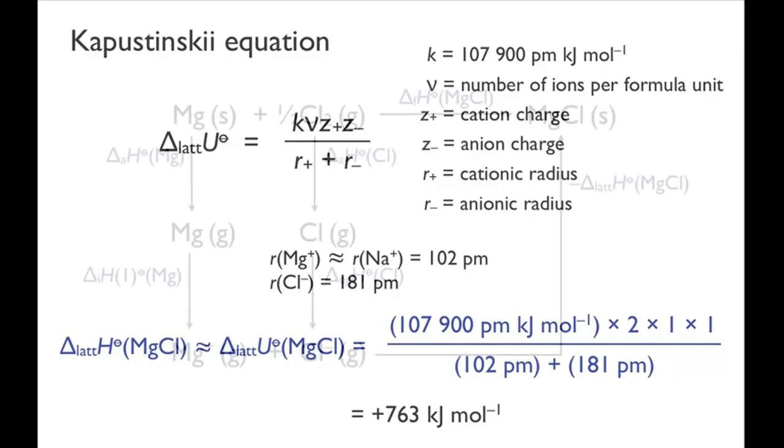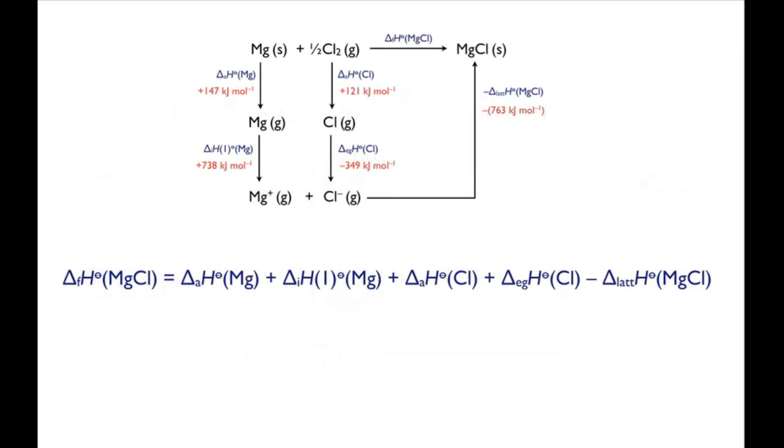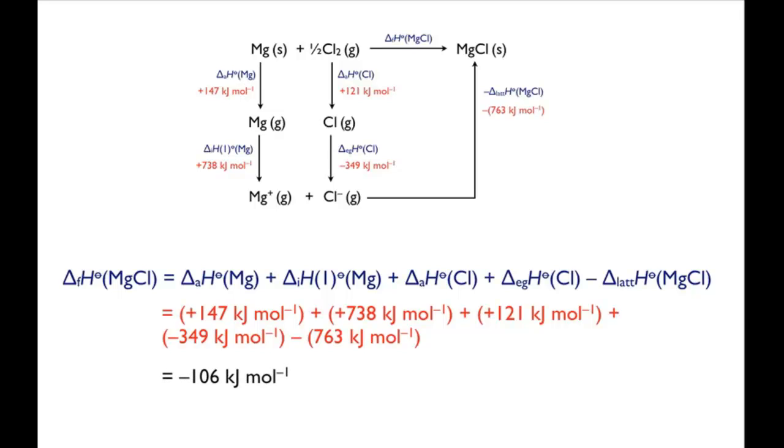Going back to the Born-Haber cycle, we now have all the values we need in order to calculate the enthalpy of formation for MgCl. The enthalpy of formation is given by the sum of the five enthalpy terms, remembering that we need to use the minus of the lattice enthalpy. Putting the values in gives an answer of minus 106 kilojoules per mole. In other words, the calculation suggests that MgCl is stable with respect to the elements.